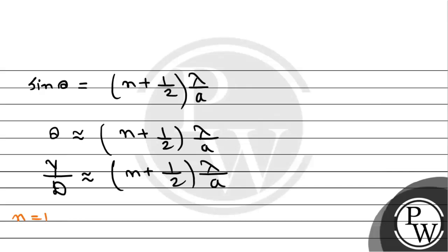Now if you will put the value of n equals to 1, so 1 plus 1/2, n is equal to 3/2, so y by D equals 3/2 times lambda by a. In the same way, for n equals to 2, the ratio y by D will be - 2 times 2 is 4, 4 plus 1 will become 5 divided by 2 times lambda by a.